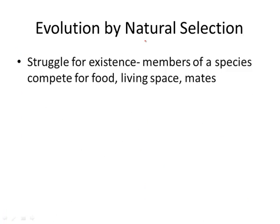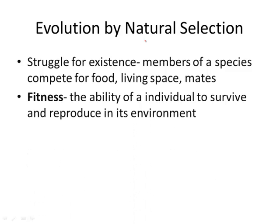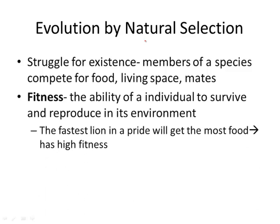The most important thing that Darwin wrote in his book was that evolution happened by natural selection. We know that there is a struggle for existence in the environment — species have to compete for food, where they live, and for mates. This means that certain individuals have a greater fitness than others. Fitness in evolution means the ability of an individual to survive and reproduce in its environment.